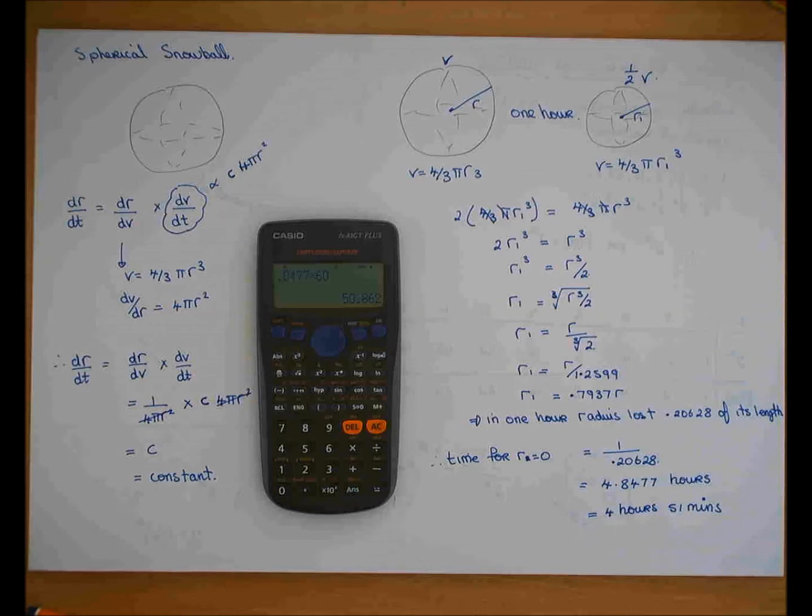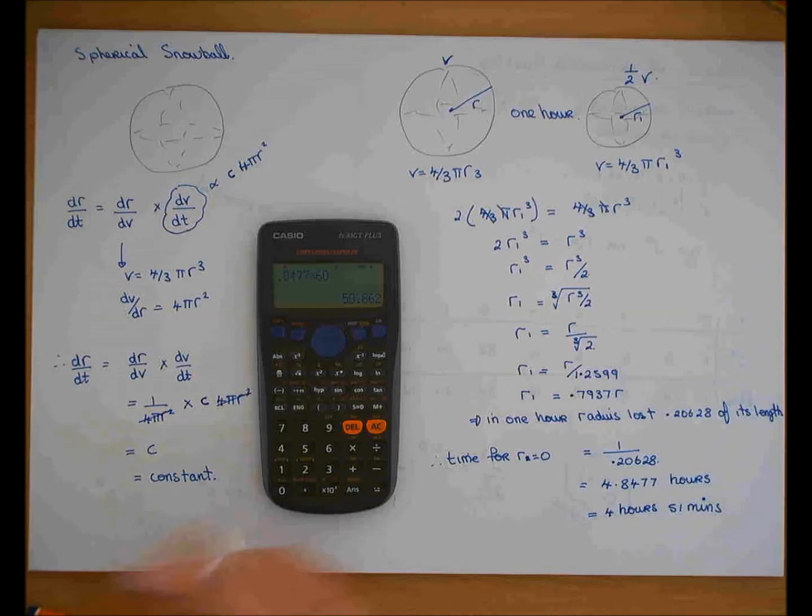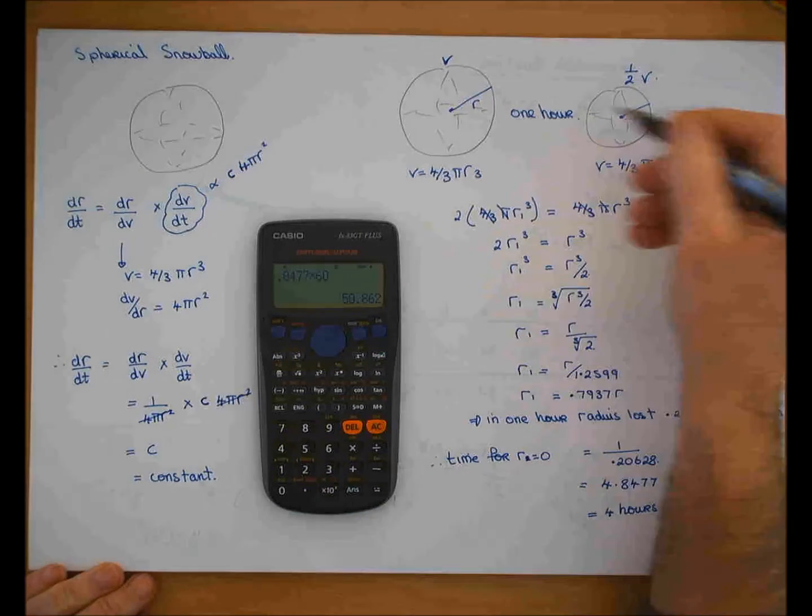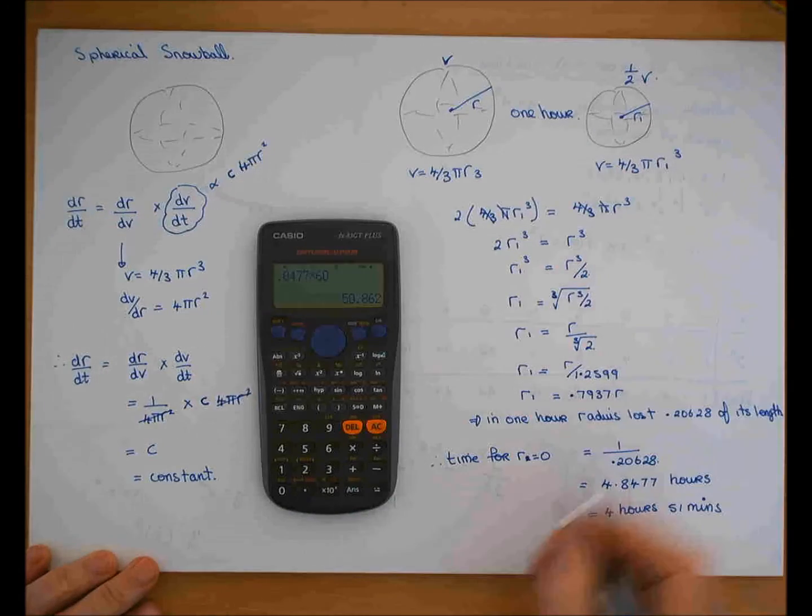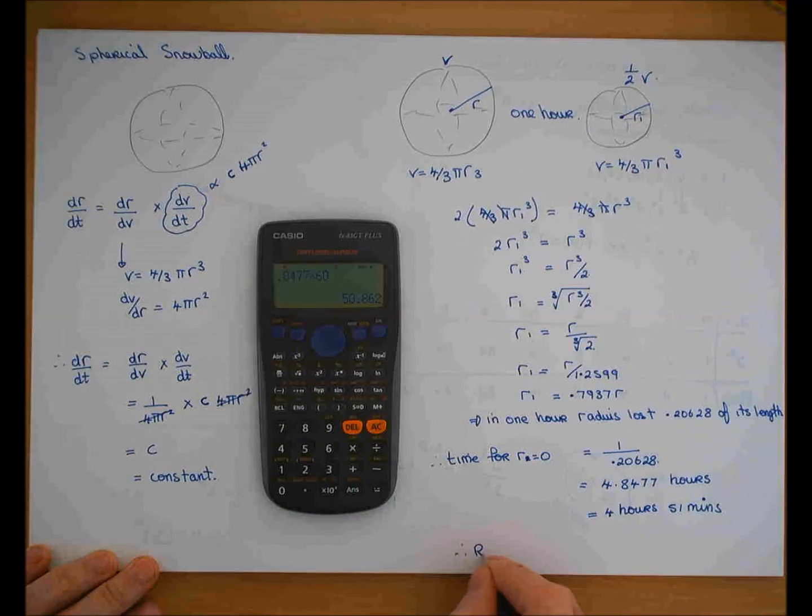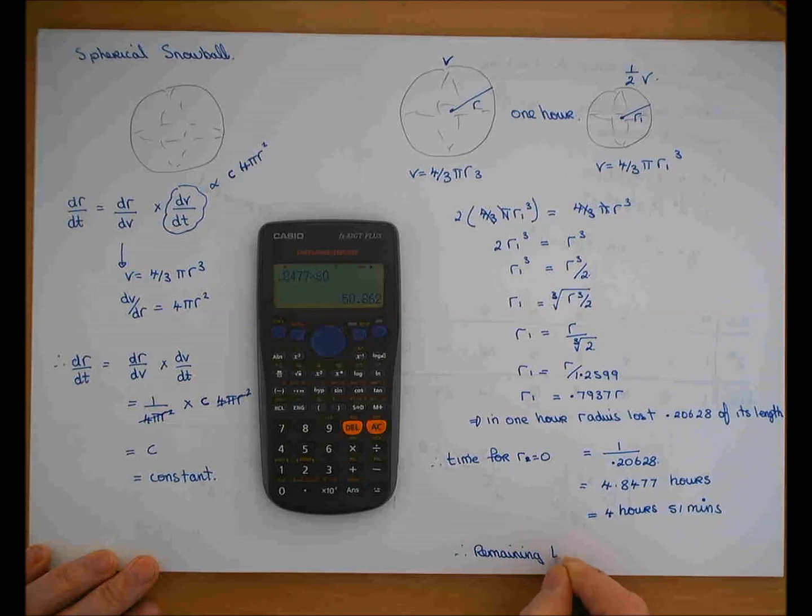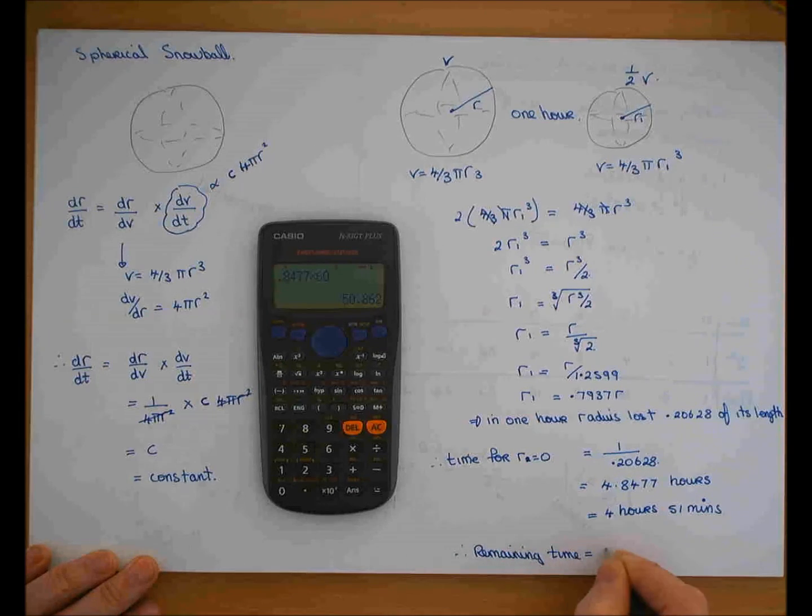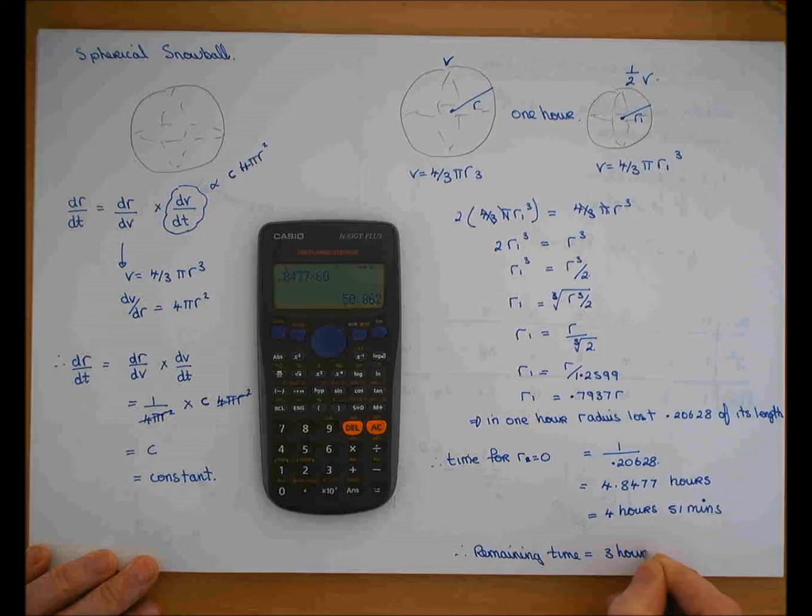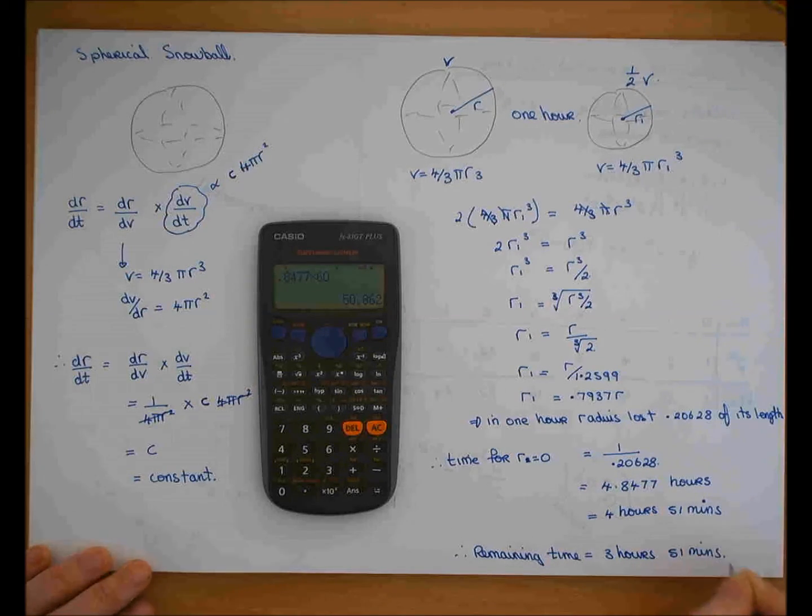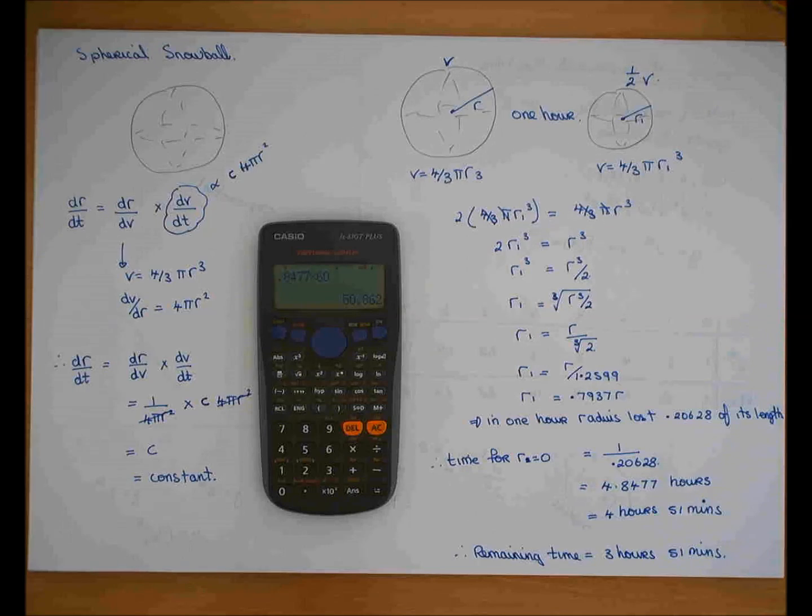But the question says, if the snowball loses half its volume in an hour, how long more? From now on, how long will it take? Well, that took 1 hour. So the rest of it, so the remaining time is equal to 3 hours and 51 minutes. And that's how long is left.